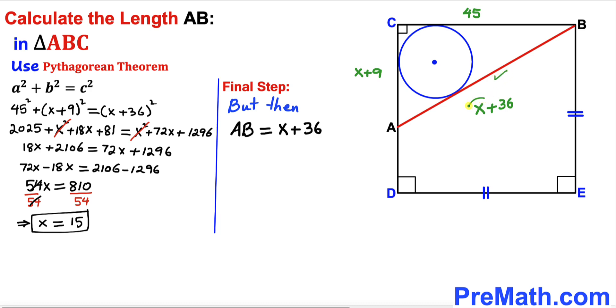We have just figured out x value as 15. We are going to substitute x by 15, so therefore our AB length is going to be 15 + 36.